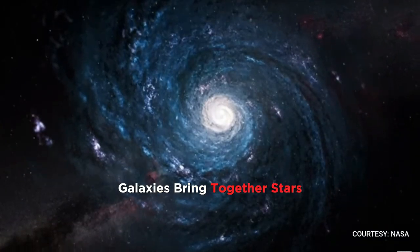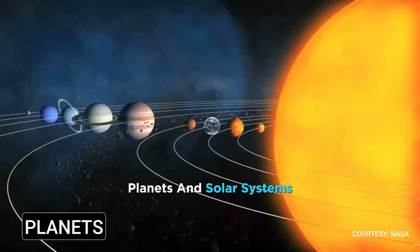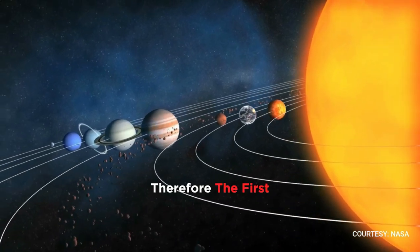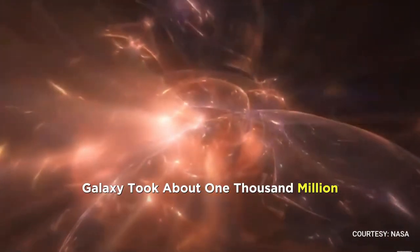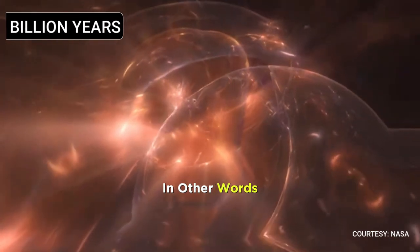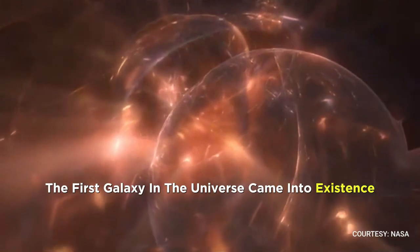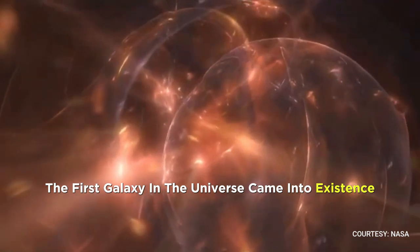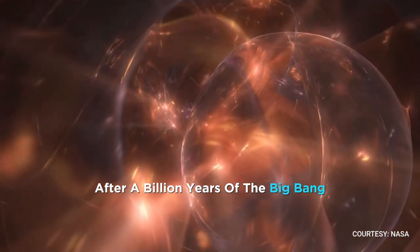As you know, galaxies bring together stars, planets, and solar systems. Therefore, the first galaxy took about 1,000 million, or 1 billion years to form. In other words, according to scientists, the first galaxy in the universe came into existence after a billion years of the Big Bang.